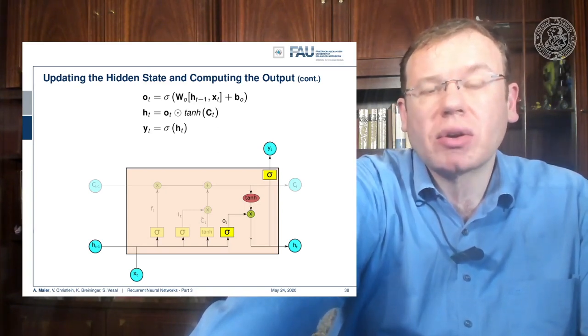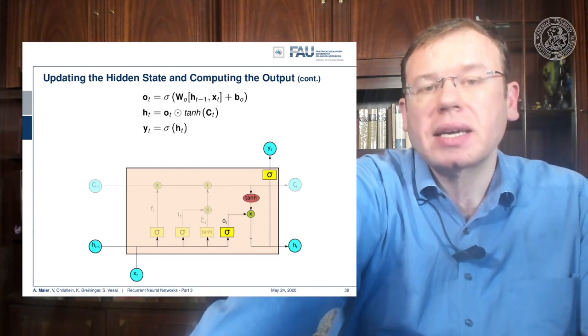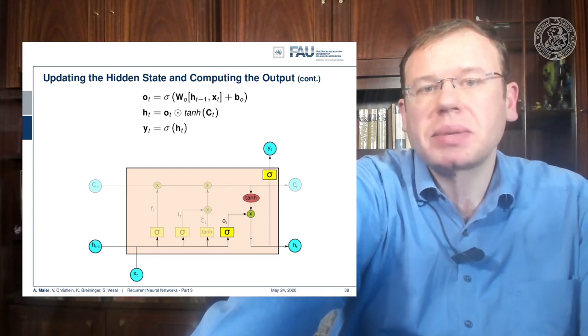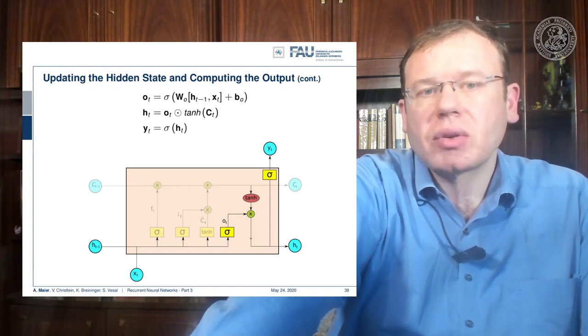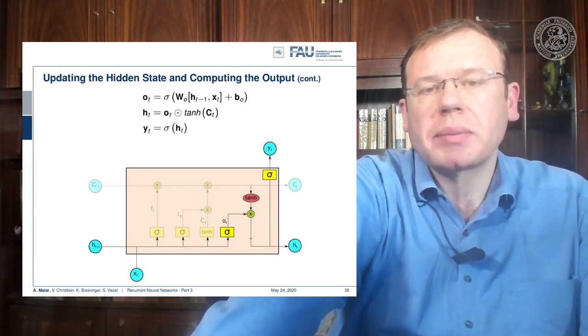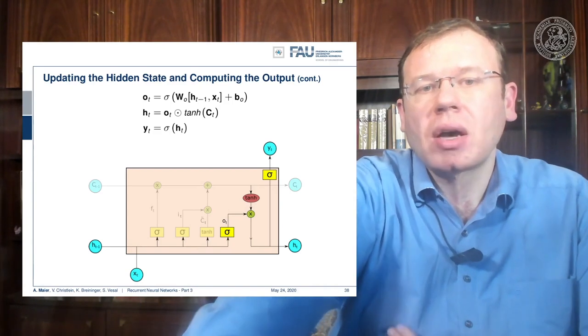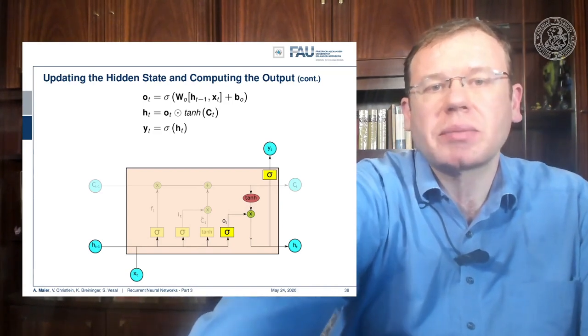Now if you want to train all of this, you can go back and use a very similar recipe as we've already seen for the Elman cell. You use the backpropagation through time algorithm in order to update all of these different weight matrices.